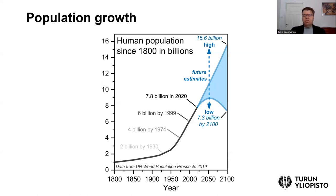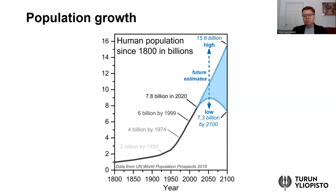There is also a lot of uncertainty about how the human population at the global level will develop from now on. The light blue colored area in this figure illustrates this uncertainty. If population growth continues at the same rate as in past decades, the human population might still double by the year 2100. On the other hand, there are more promising signs that the growth rate is slowing down — perhaps the peak population might be seen by the 2050s, after which the human population might decrease. This is fundamentally important for the environmental challenges we face today.